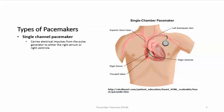There are several types of pacemakers. The first is the single chamber pacemaker, which carries electrical impulses from the pulse generator to either the right atrium or right ventricle. This picture shows it going to the right ventricle, but it can also stop in the atrium. The pulse generator sends an electrical signal to the end of the lead.